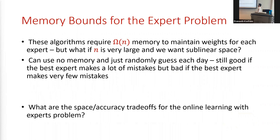All previous work requires linear space to store all the weights and running progress of each expert, keeping track of how well each expert has done so far. But N could actually be very large — what if we don't want to store all the experts and want sublinear space? On one extreme, we can use no memory and just randomly guess each day. That's good if the best expert makes a lot of mistakes, but if the best expert makes very few mistakes, it won't have good regret. So the question is: what are the space-accuracy trade-offs for the online learning with experts problem?